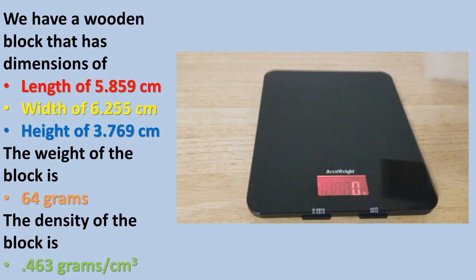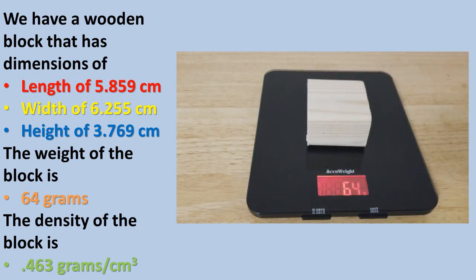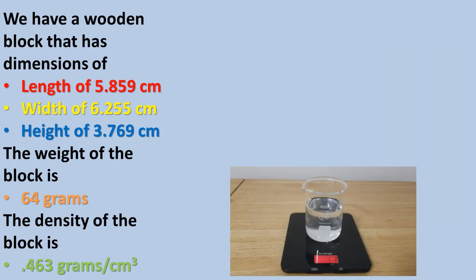Now, let's solve the problem if we are given the weight of the block, which in this case is 64 grams, and the density of the block, which in this case is 0.463 grams per cubic centimeter.